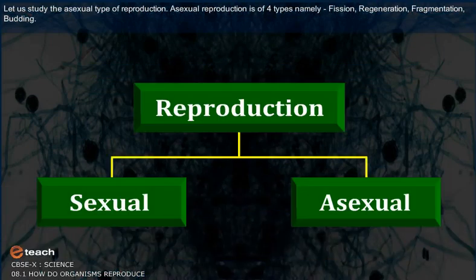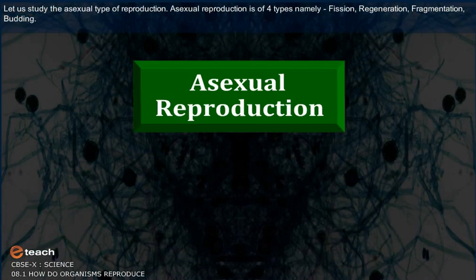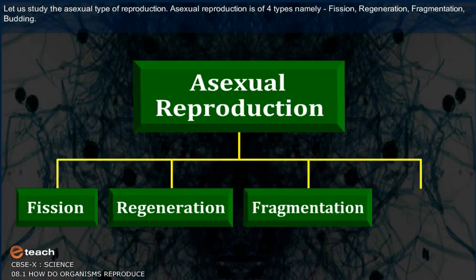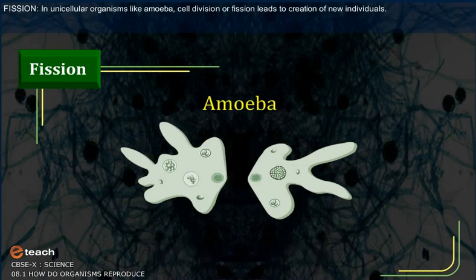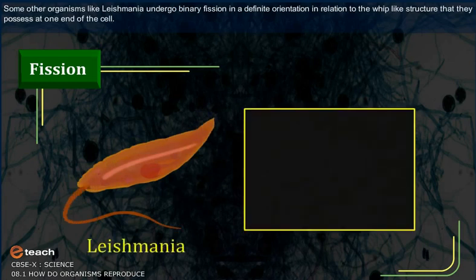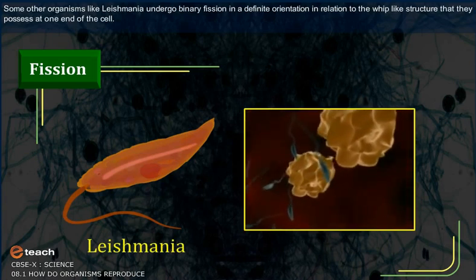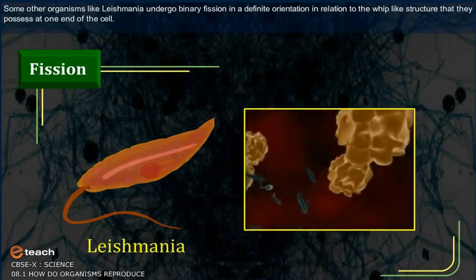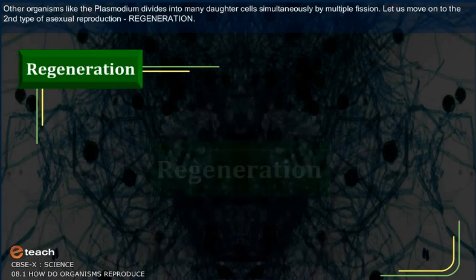Asexual reproduction is of four types: fission, regeneration, fragmentation, and budding. In unicellular organisms like amoeba, cell division or fission leads to the creation of new individuals. Organisms like Leishmania undergo binary fission in a definite orientation in relation to the whip-like structure they possess at one end of the cell. Other organisms like Plasmodium divide into many daughter cells simultaneously by multiple fission.